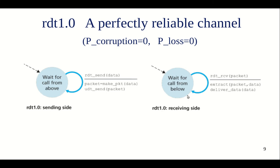We have the code for a sender and the code for a receiver. When does the sender get activated? When there is a call from above — the application calls rdt_send with some data. What it should do is make a packet with that data and call udt_send. We already have a template — a function for rdt_send, a function to make a packet as seen in the packet class, and a function to send it, which is the udt_send function on the channel. So these things are already ready, and we can fill this in as Python code.